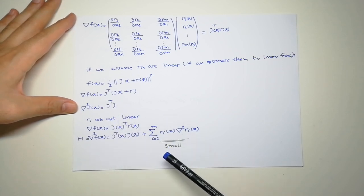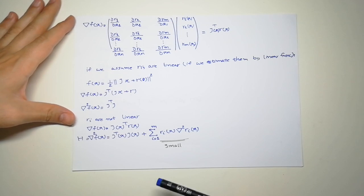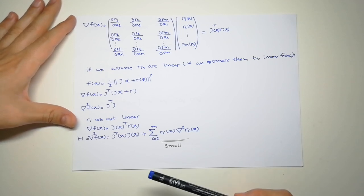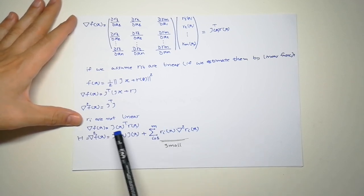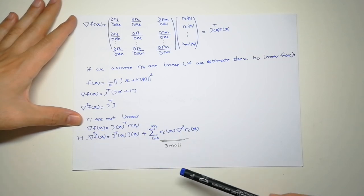But we know that the R_i's are not linear. If you approximate it by a linear function, the linearization depends on the point.